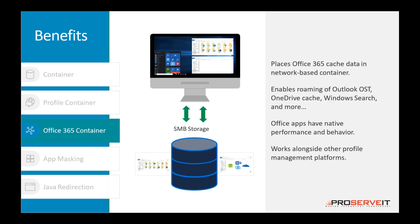On the Office 365 side, there are a number of things that help improve the overall end user experience. Because we do have that persistent data store for the user profile, we're able to take advantage of Outlook OST files and OneDrive caching, Windows search — all things that are often critical to ensuring a positive end user experience when working with a cloud solution like Office 365. Even though Office 365 and the user data are stored separately and blended together as part of the login process, Office applications have native performance and behavior — they might be externally stored, but they're treated just like an internally installed application on a given desktop and they behave and feel the exact same way.